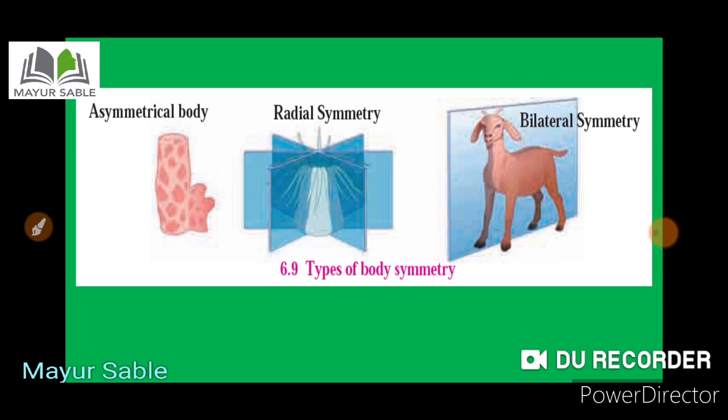In the case of an asymmetrical body, there is no imaginary axis through which we can get two equal halves. For example, amoeba, sponges, and paramecium — we cannot divide their bodies into two equal parts through any axis. This type of body symmetry is called asymmetry.